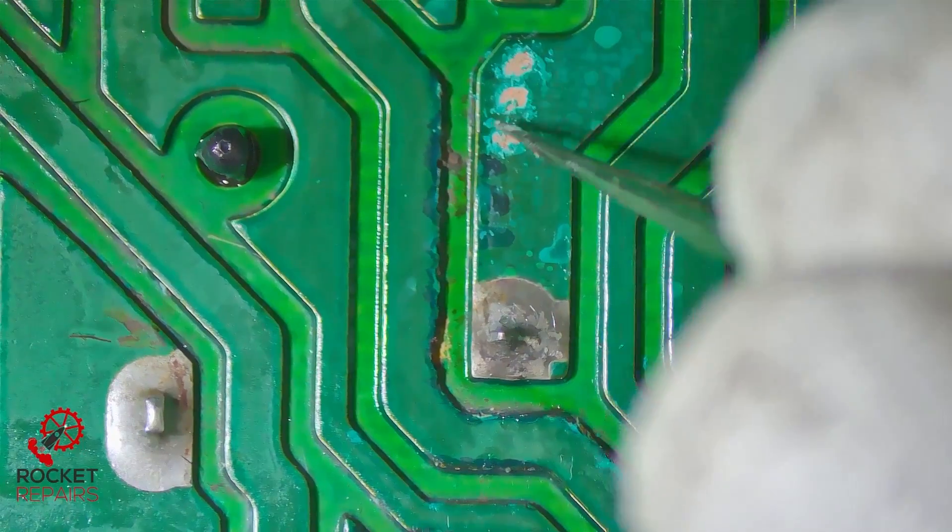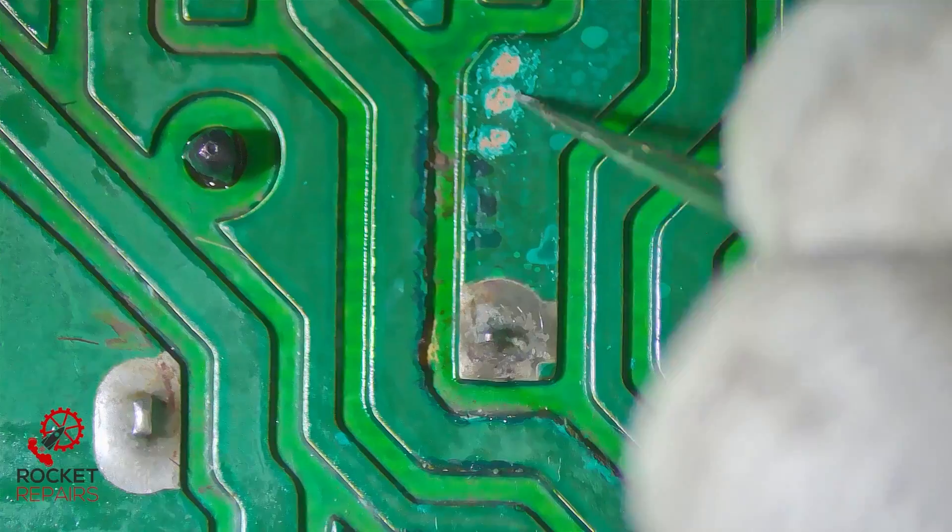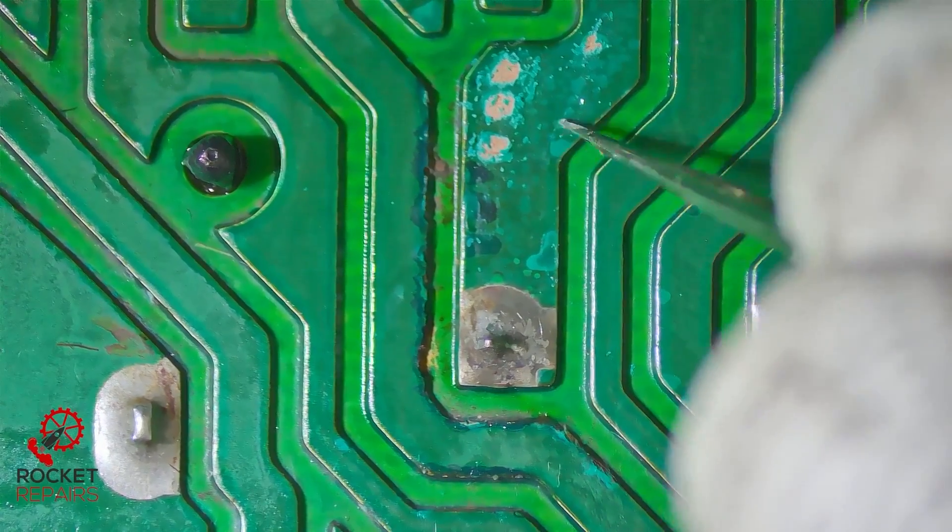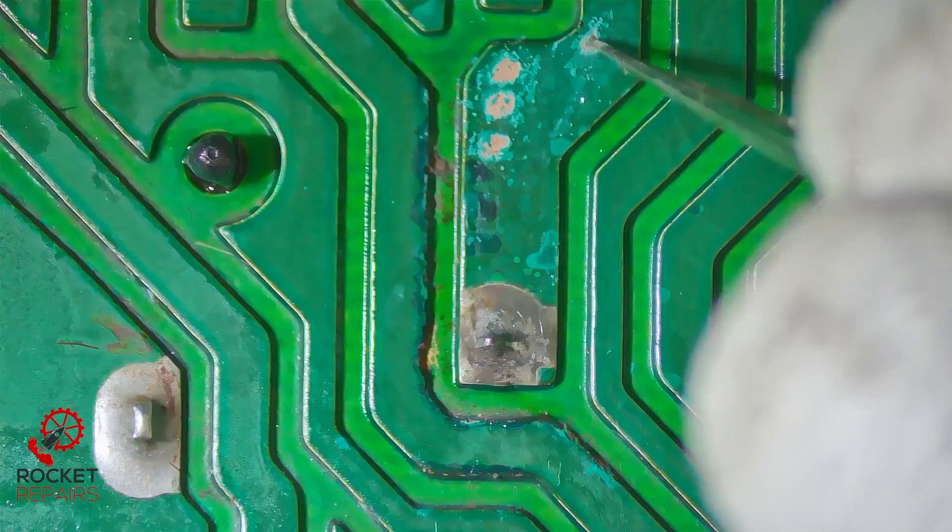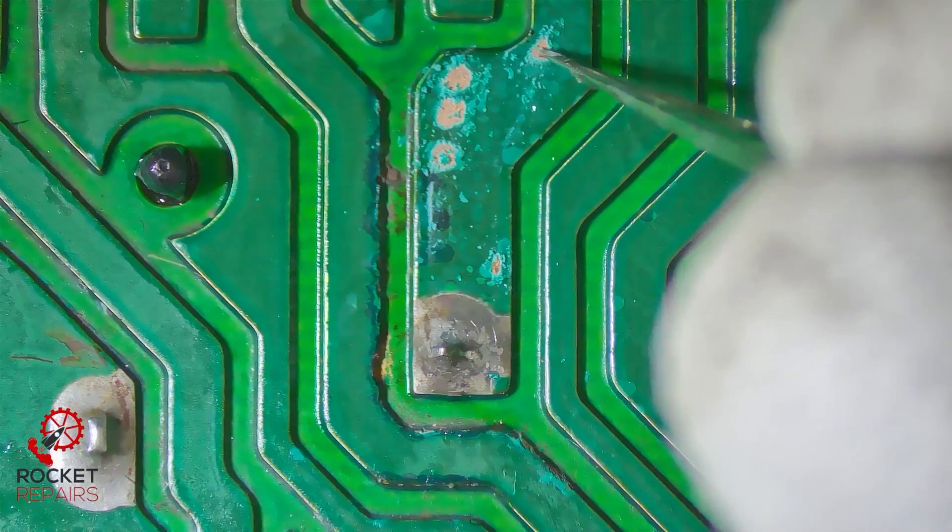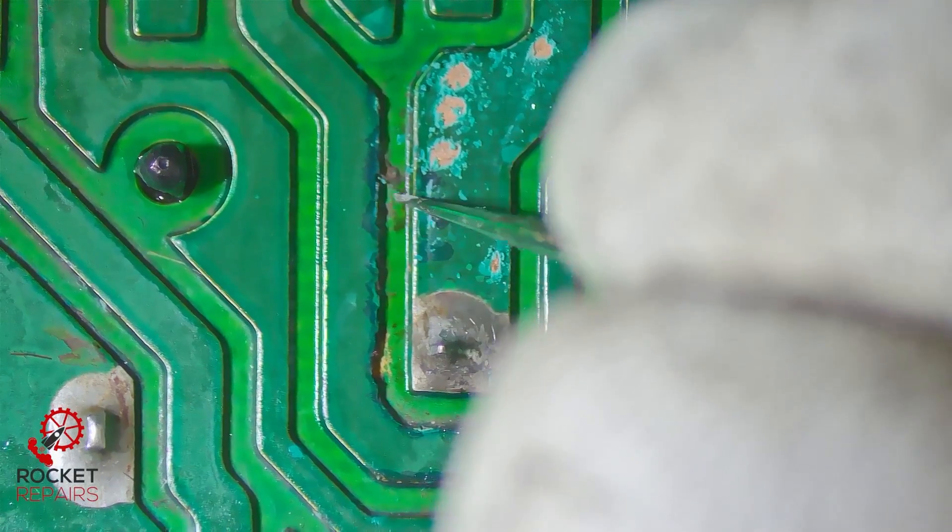Just dry all of that off now. Just scraping away this. Now obviously this mask shouldn't come off as easy as what it literally just has. And again, this could indicate just weakness and corrosion. So I'll put some solder mask over these exposed bits.